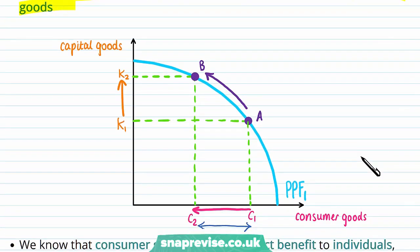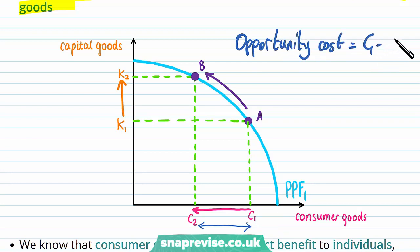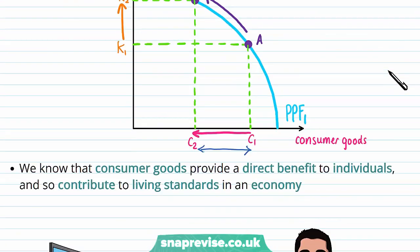We have an increase from K1 to K2, showing the increase of capital goods. However, we have decreased our consumer goods from C1 to C2, and therefore our opportunity cost will be equal to C1 minus C2 — that's the number of consumer goods that we have given up.